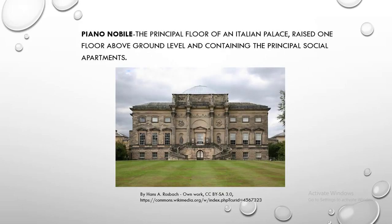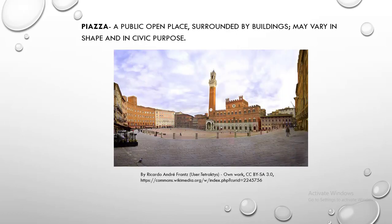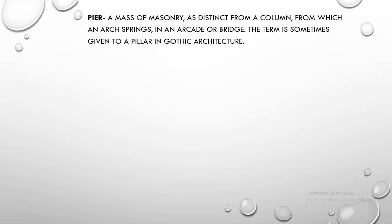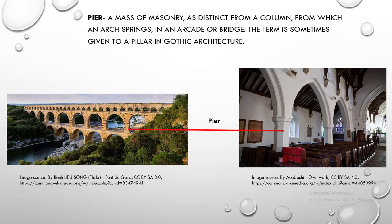Piano Nobile. Piano Nobile is the principal floor of an Italian palace, raised one floor above ground level and containing the principal social apartments. Piazza. Piazza is a public open place, surrounded by buildings, and may vary in shape and in civic purpose. Pier. Pier is a mass of masonry, as distinct from a column, from which an arch springs in an arcade or bridge. The term is sometimes given to a pillar in Gothic architecture.